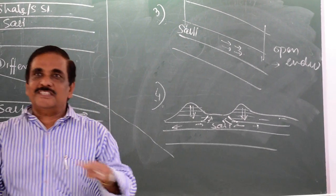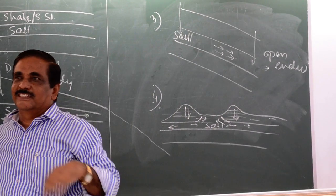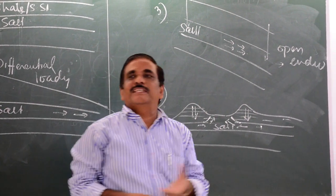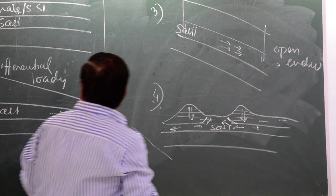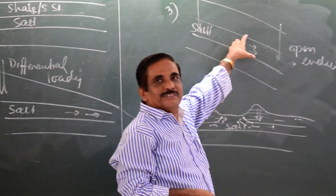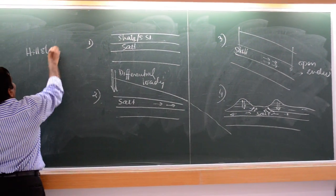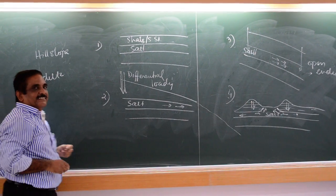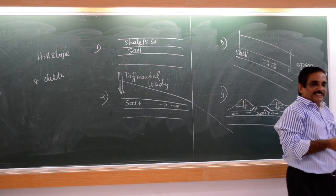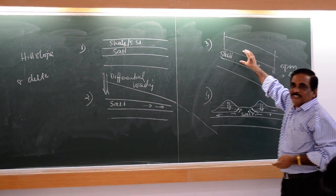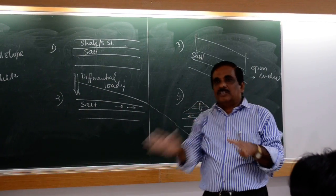But in this case, though horizontal, because you have different amounts of sediments or overburden at different places, there is a differential loading, so salt will rise where your load is less. The salt will accumulate there and start rising. These types of situations happen on the hill slope or the delta. Suppose this is a hill slope — inside the hill you have some salt. With the overburden, this salt will start flowing down along the hill slope, and you will get salt layers or salt glaciers.